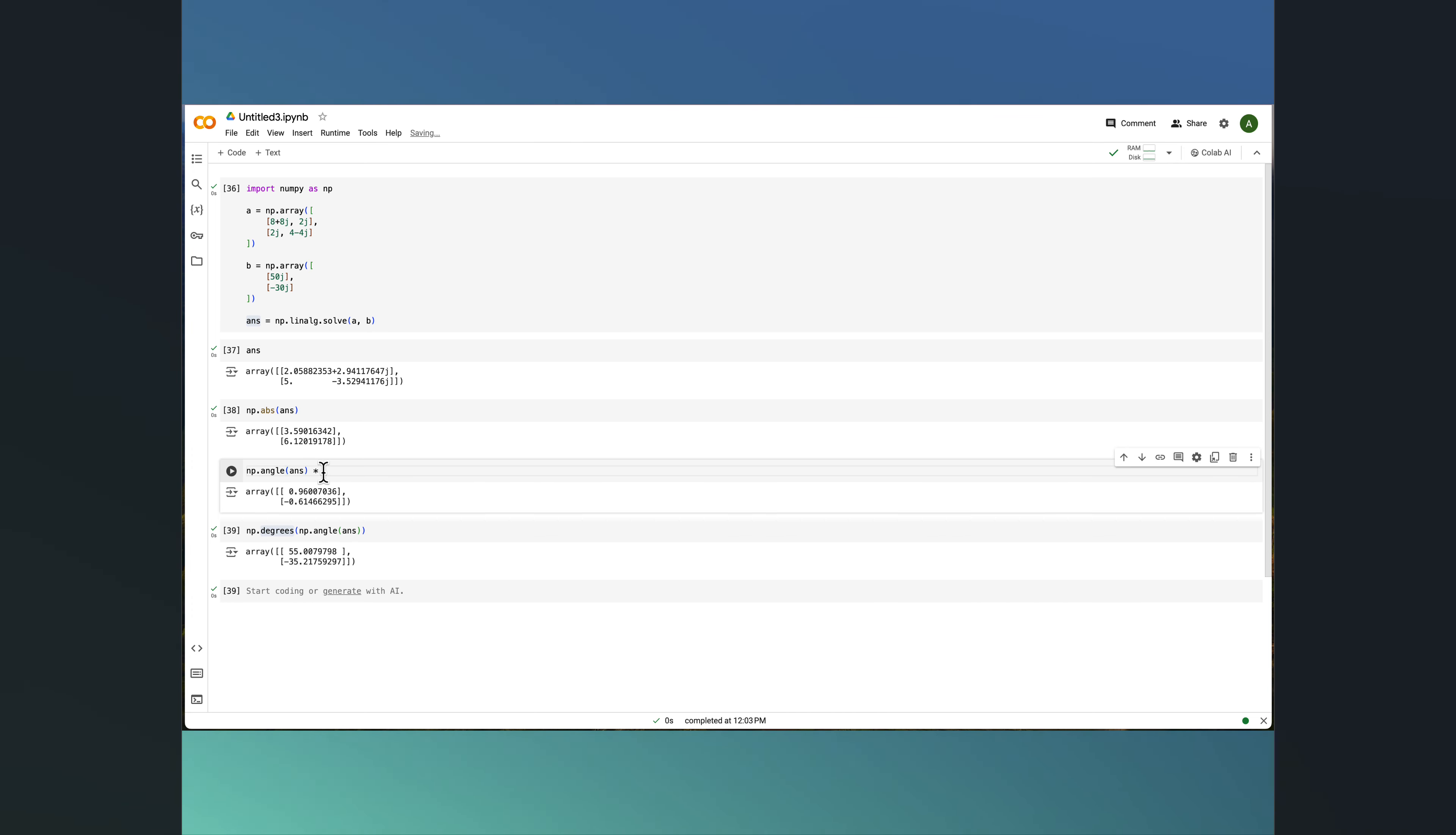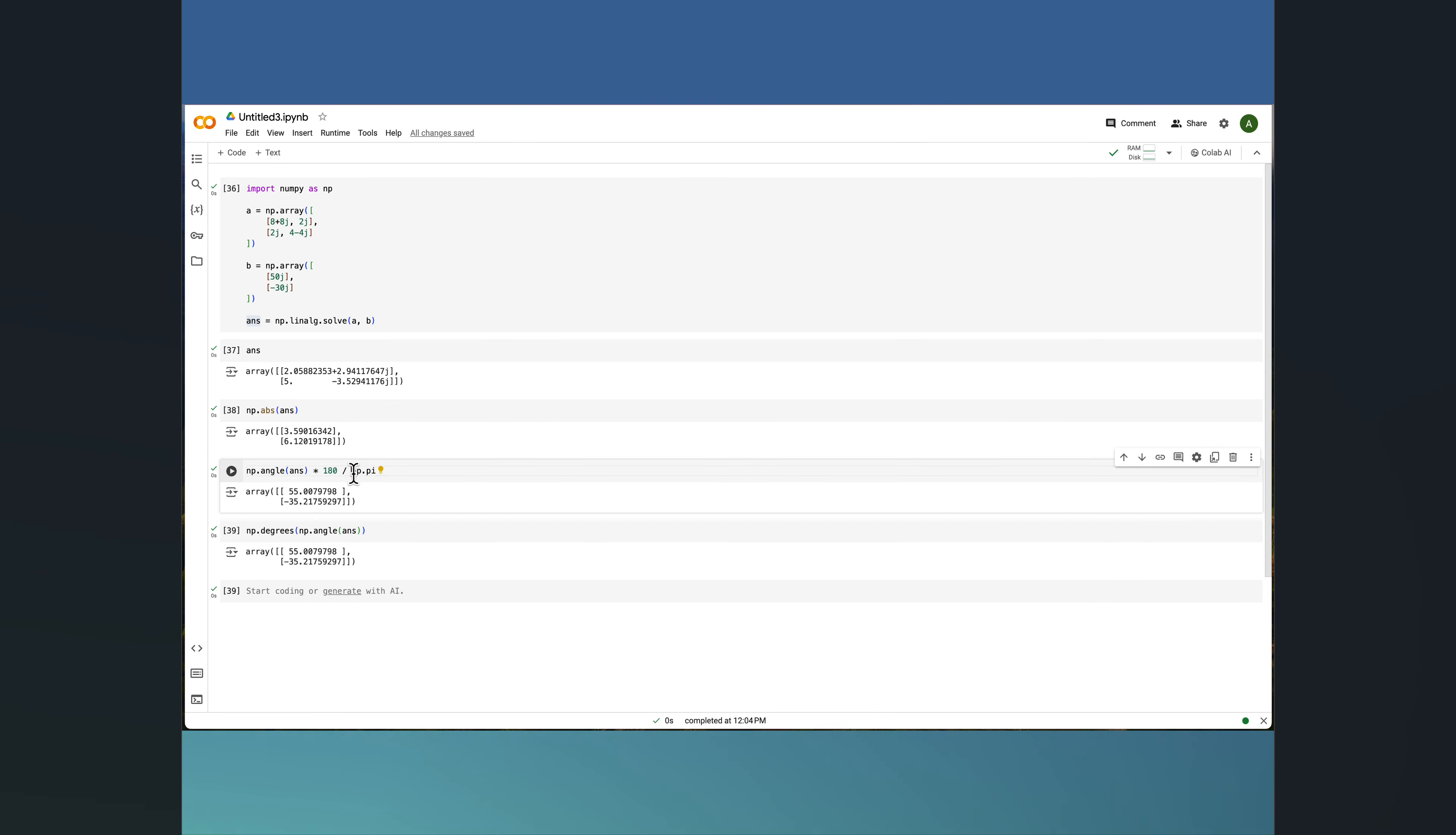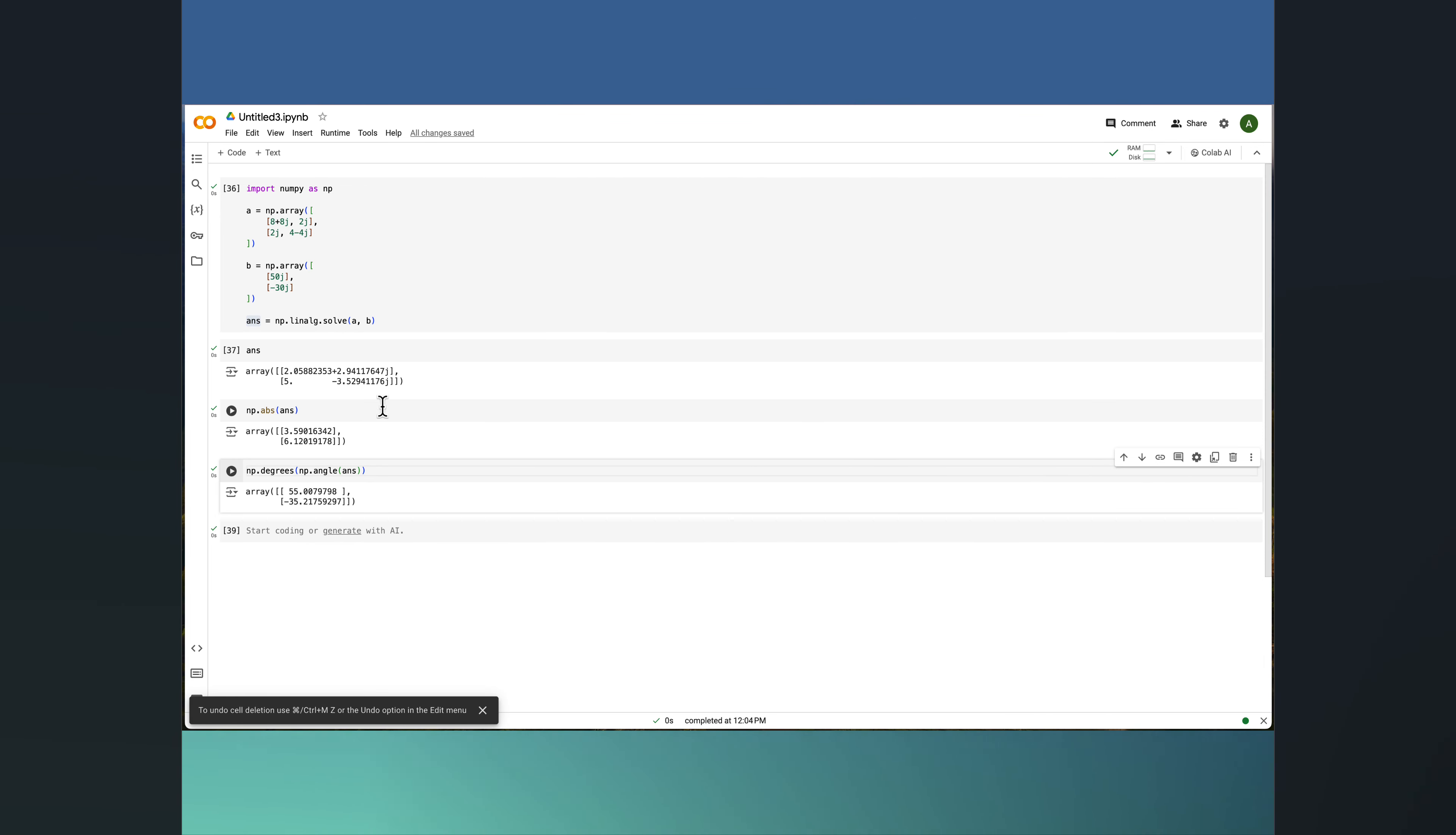However these are in radians, typically we need to convert this to degrees. This is what you see in here. I basically passed it to another numpy function called degrees to convert these from radians to degrees. You can also do that manually by multiplying by 180 divided by pi, and we should end up with the same one.